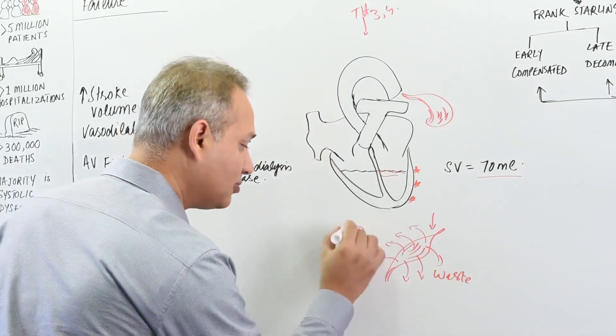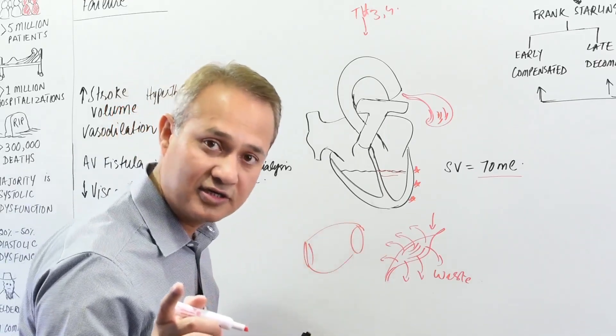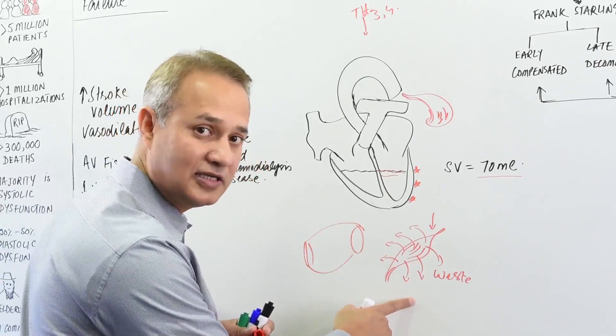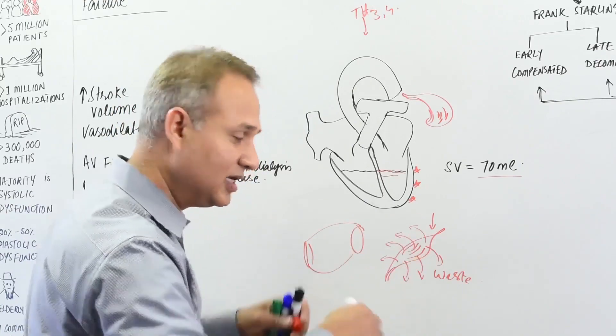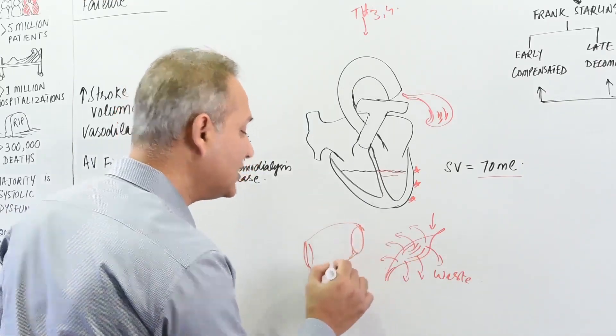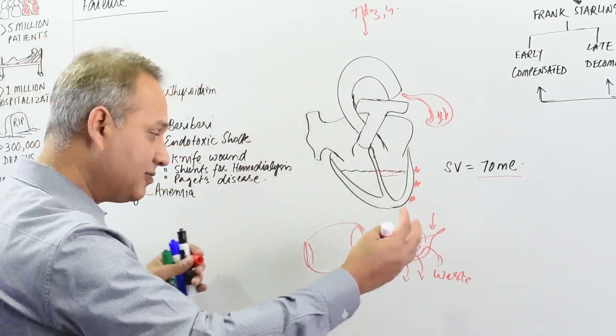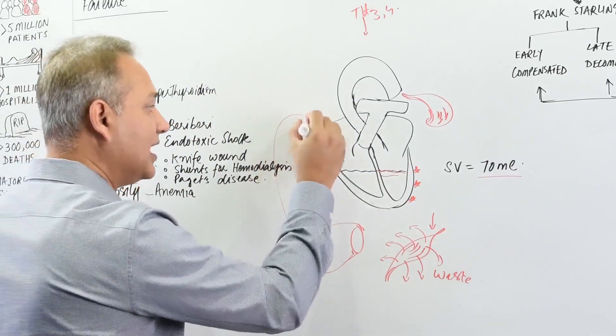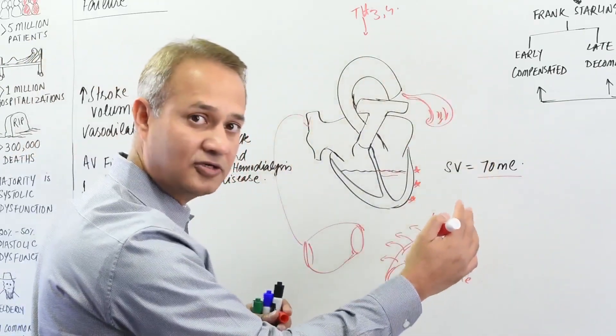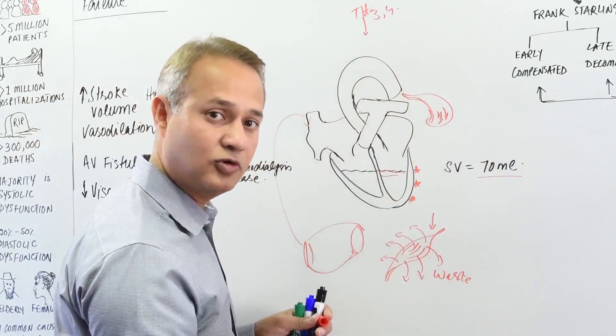That waste will cause effect on the blood vessels. If you have more tissue metabolites, the autoregulation we've done in these lectures, the blood vessels will start dilating. As the blood vessels start dilating, the resistance to flow would reduce and the blood demand, the venous return would increase, and that would increase demand on the heart to create increased ejection fraction or increased stroke volume.